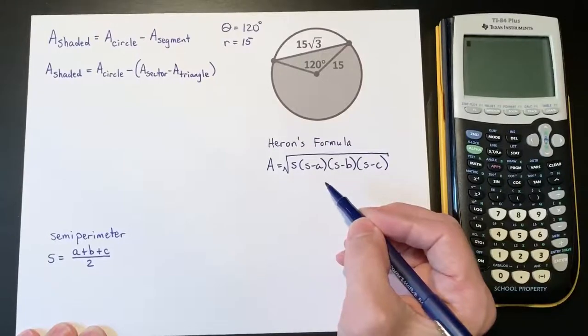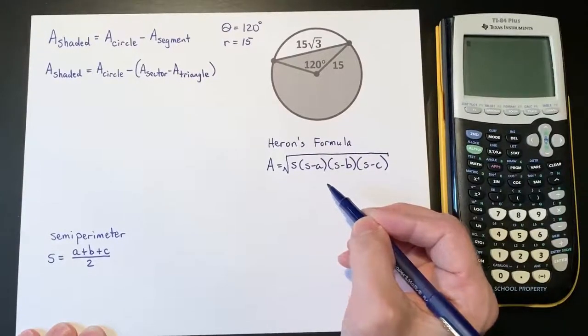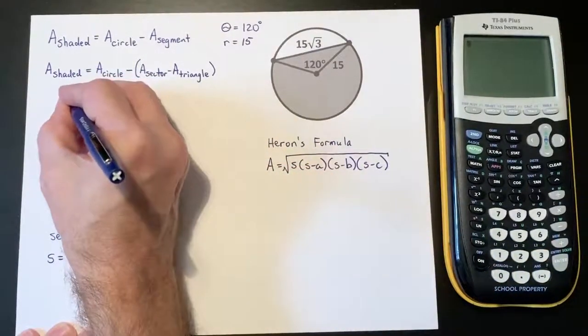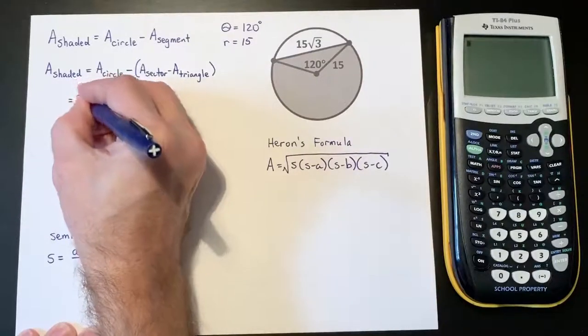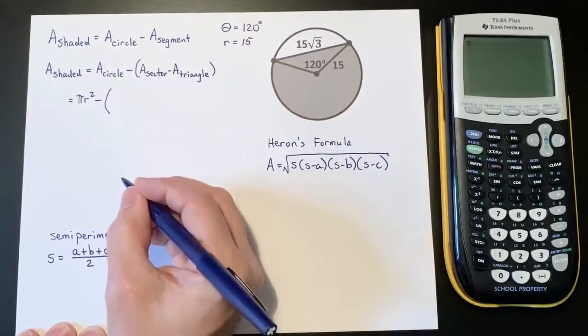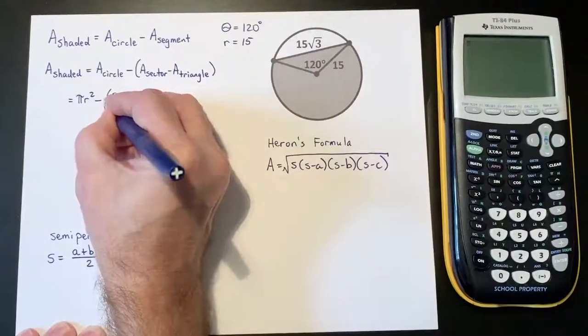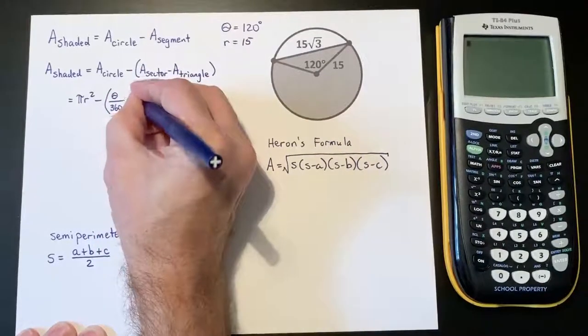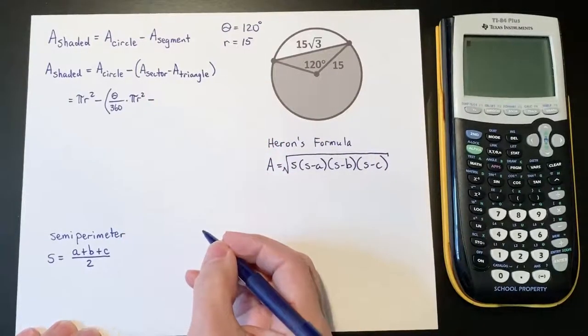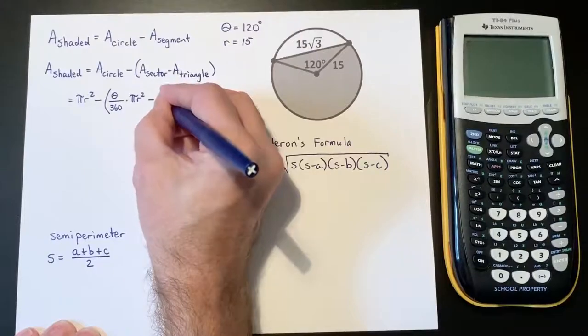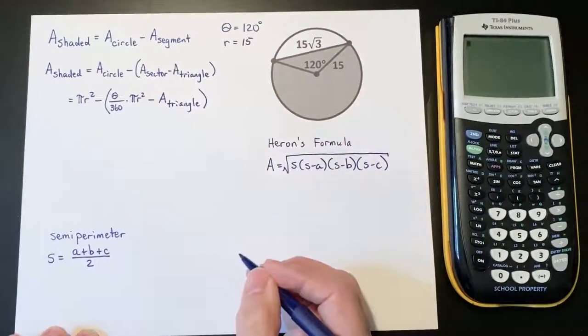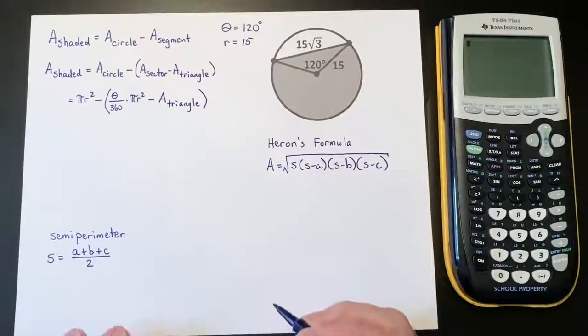Well, we're actually going to have to use Heron's formula in order to find the area of the triangle. We'll get to that in just a moment. So first off, let's go ahead and put in what we do know. The area of the circle is πr² minus the area of the sector, which is θ/360 times πr², minus the area of the triangle. I'm just going to leave it for the moment as the area of the triangle. We've got to figure out the area of that triangle.